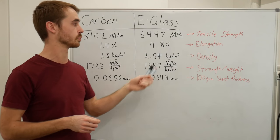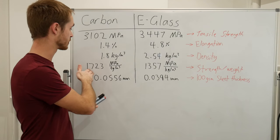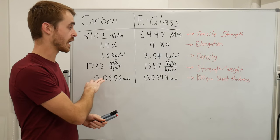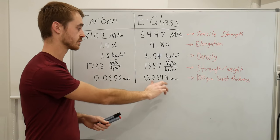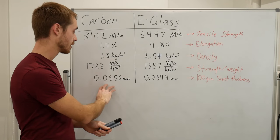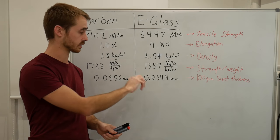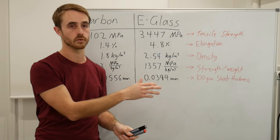Carbon is less dense, 1.8 to 2.54, which gives it its superior strength to weight by a little bit. Because of that less density, its sheet thickness on a 100 grams per square meter sheet means it's got a 0.055 millimeter thickness as opposed to 0.0394 millimeters.